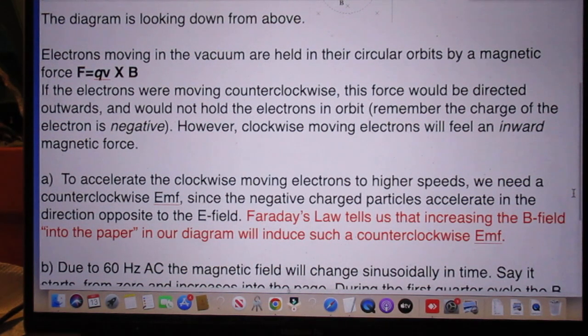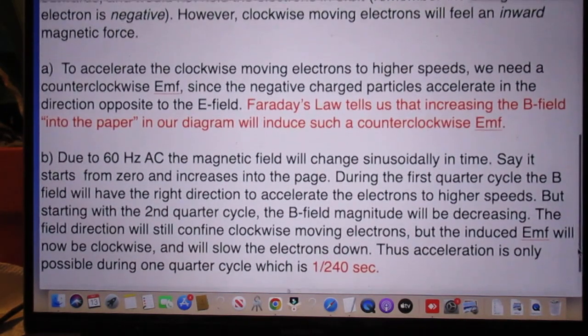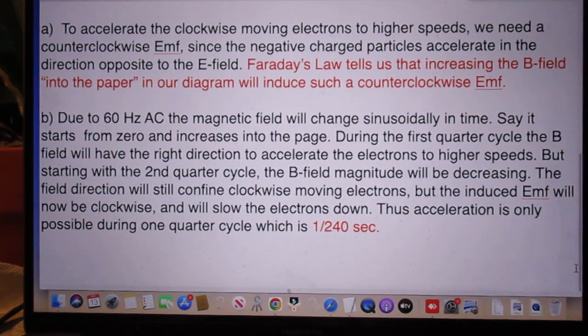So now we will get to the answer of question A. To accelerate the clockwise moving electrons to higher speeds, we need a counterclockwise EMF, since the negative charged particles accelerate in the direction opposite to the electric field.